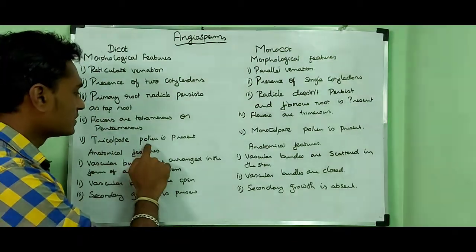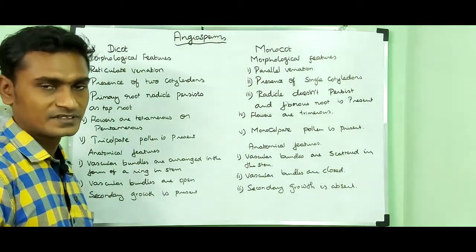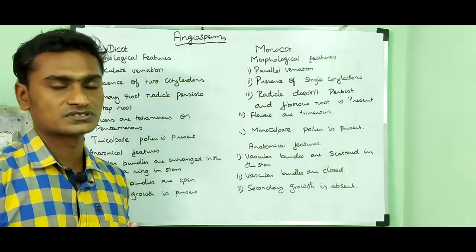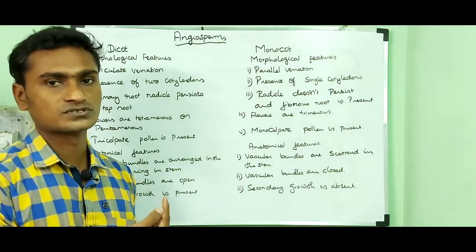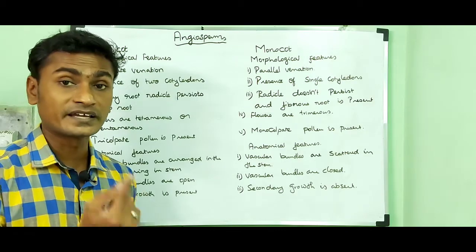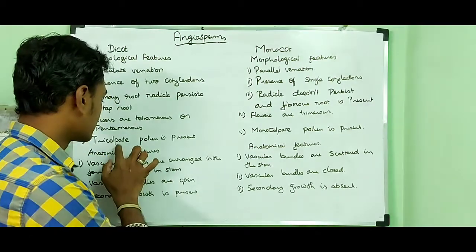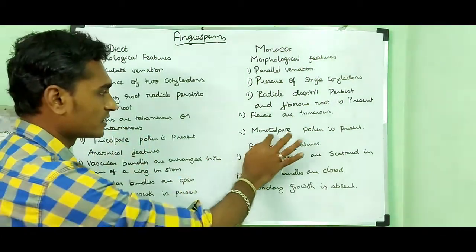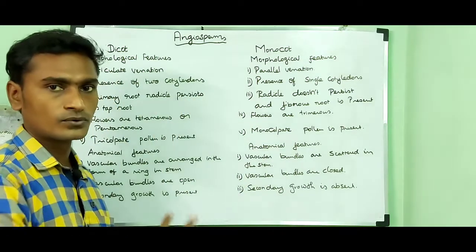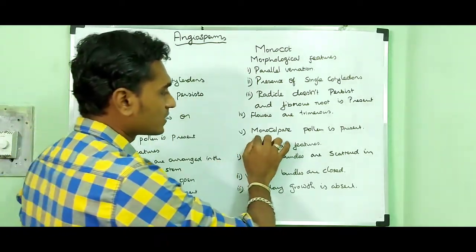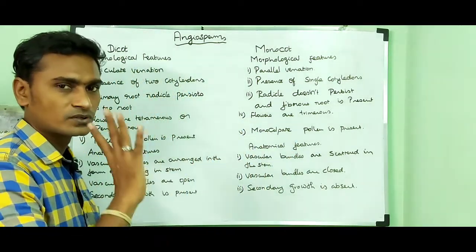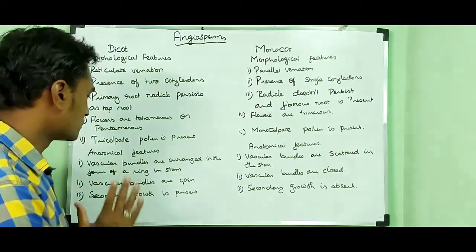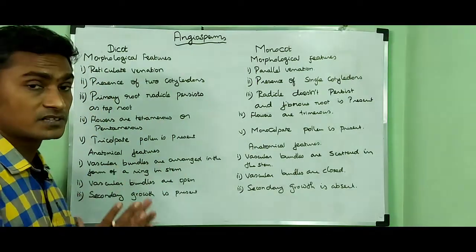Tricalpate pollen is present in dicots. That means the pollen grain contains three furrows — calpate means a furrow. In monocots, pollen is monocalpate, meaning only one furrow is present in the pollen grain.